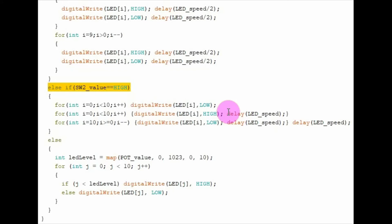Now if switch two is pressed, first we switch off the bar graph LEDs. And then using these two for loops, we sketch another pattern.